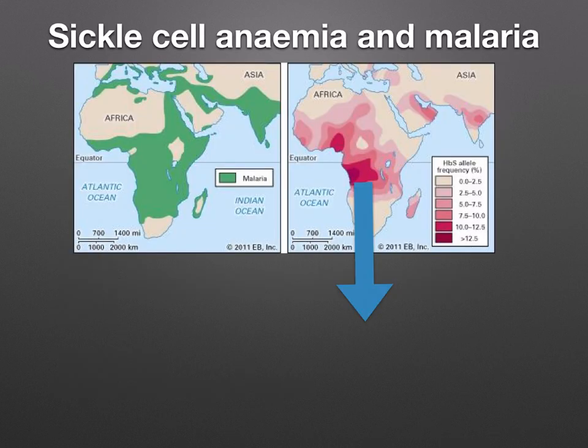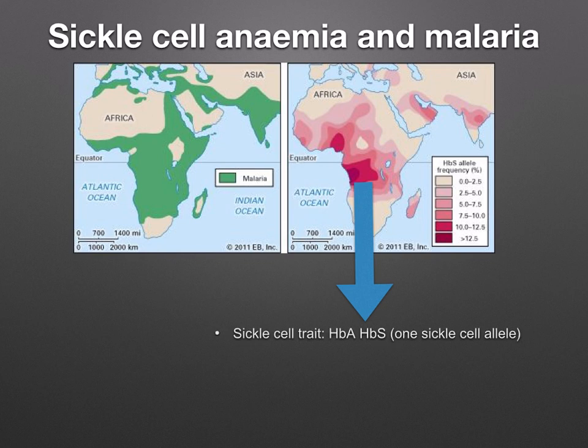If you have a look at this map, notice how where there is a high incidence of malaria on the left, the sickle cell trait is also found, as you can see on the right. This is because people who are carriers of the sickle cell trait are less likely to catch malaria due to the shape of their red blood cells. A carrier's condition is known as sickle cell trait.